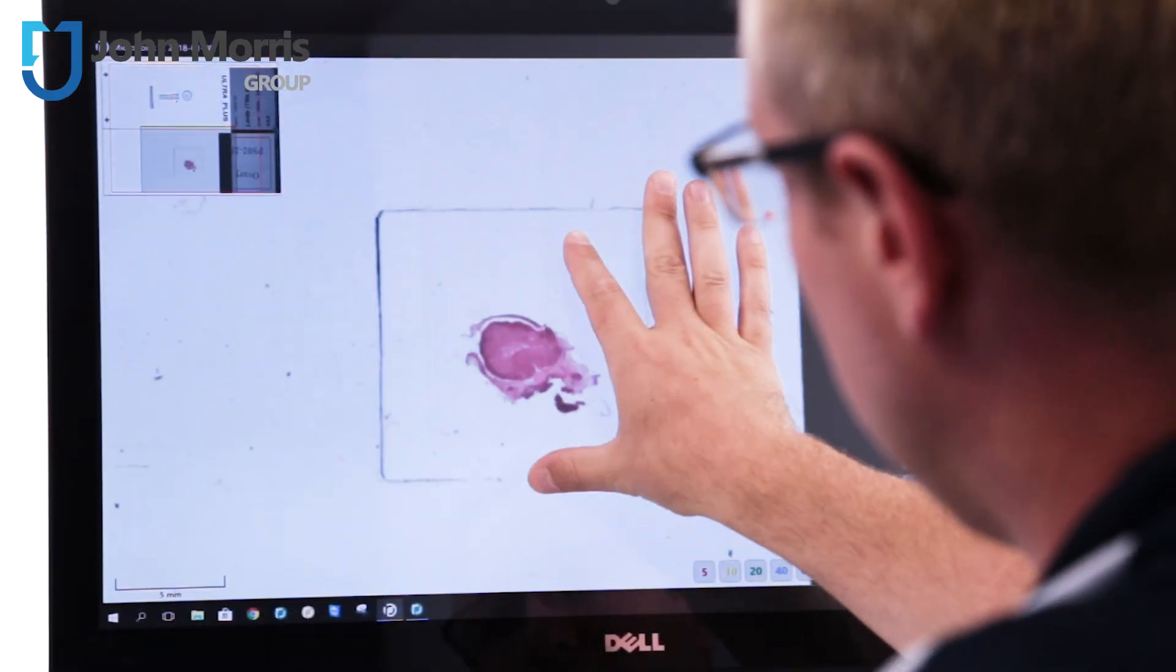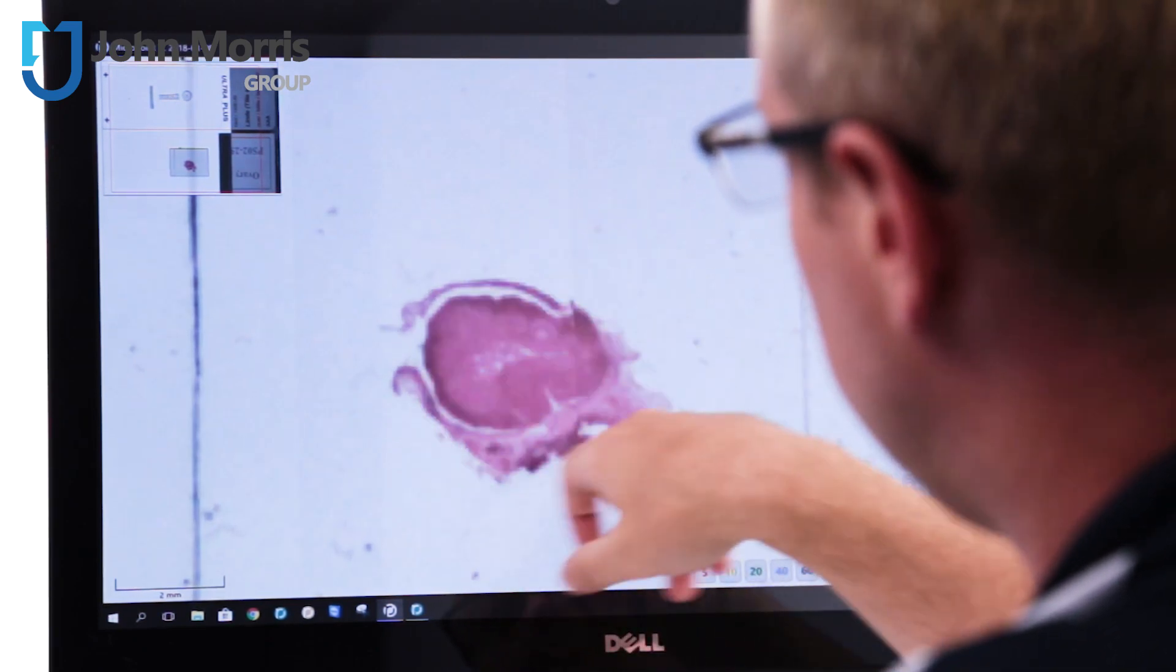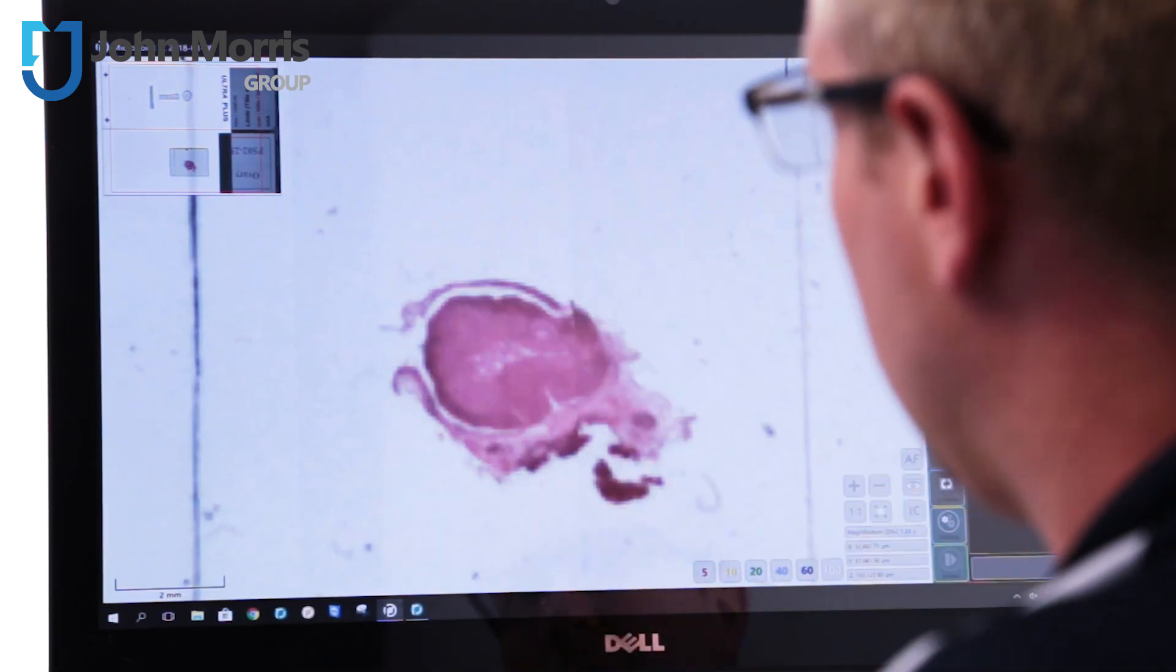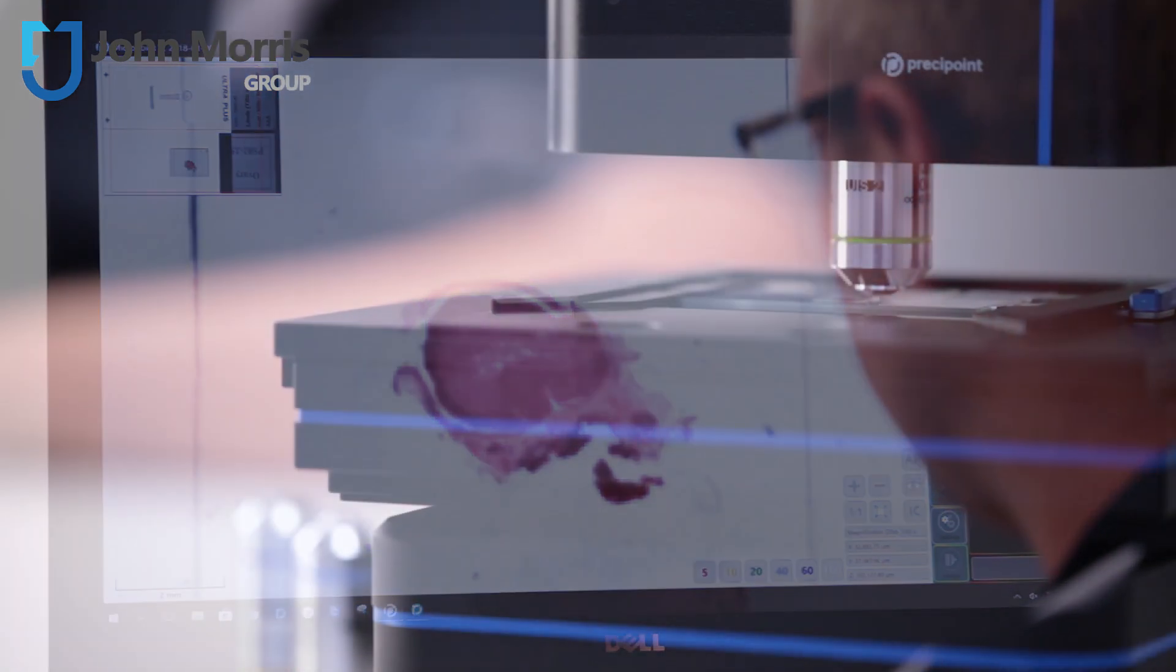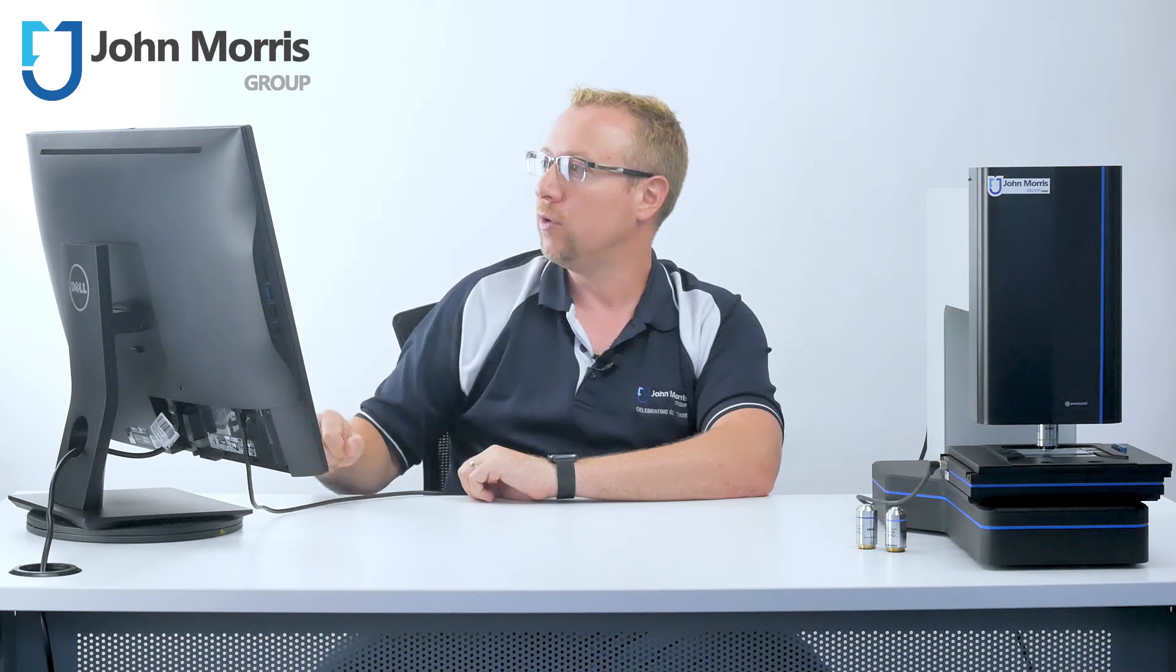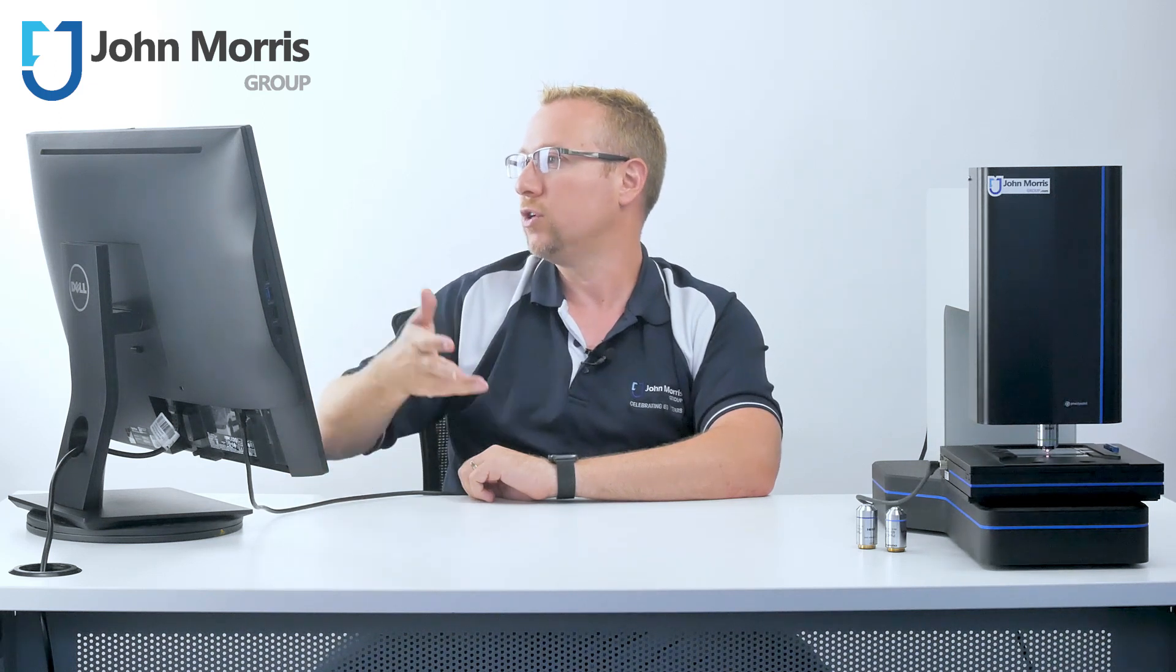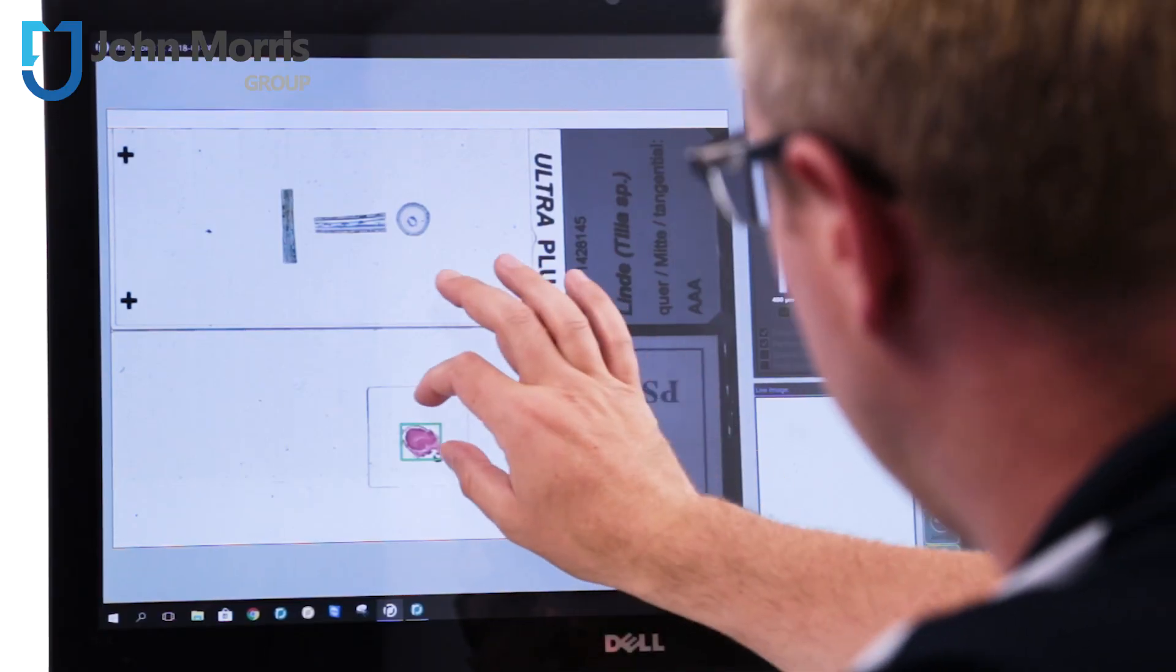So you can see here, we have a cross section of a rat ovary and that's just working its way through now to resolve this particular image for us. We're currently in instant scan mode but what we're going to do is go across to scanning mode and here we go.